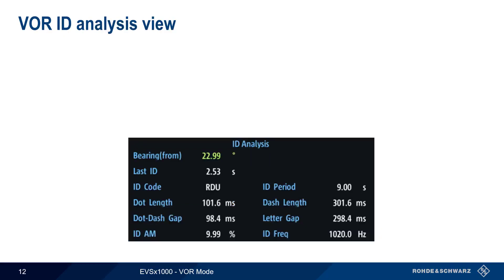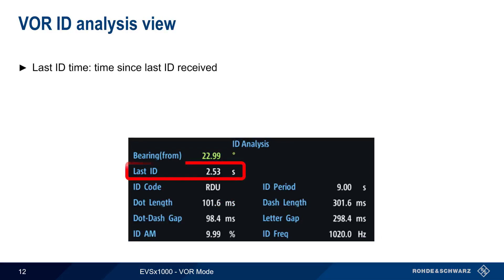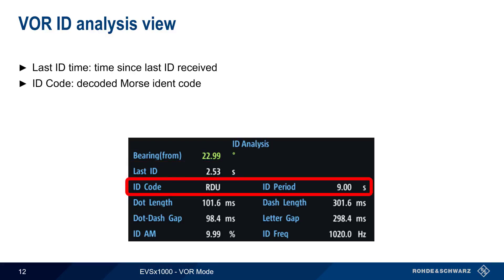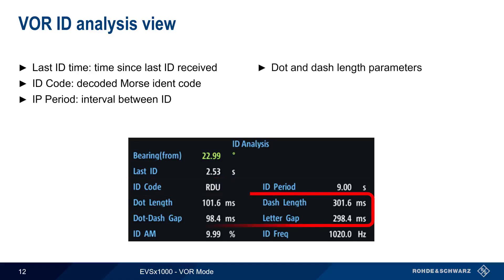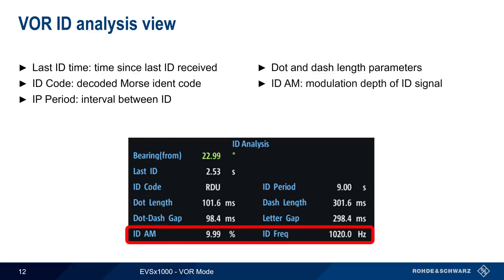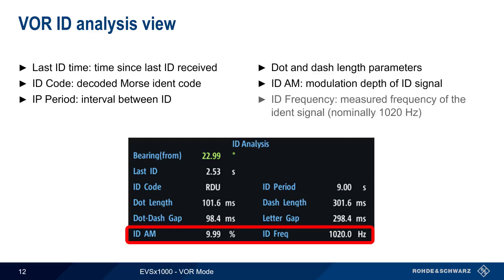Information about IDENT signal parameters can be seen in the ID analysis view. The time since the last received ID is shown, as well as the decoded Morse ID code, and the period or interval between the ID signals. The length and spacing of the dots and dashes in the Morse ID can be seen, along with the modulation depth of the ID signal and the frequency of the ID signal — this should normally be about 1020 Hz.